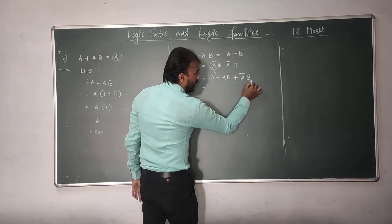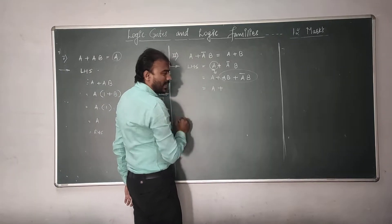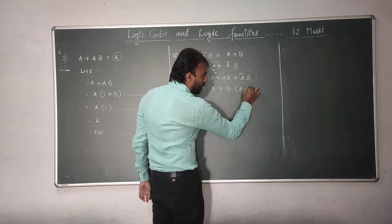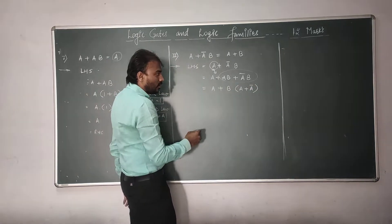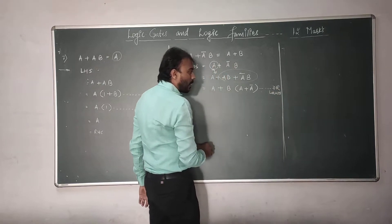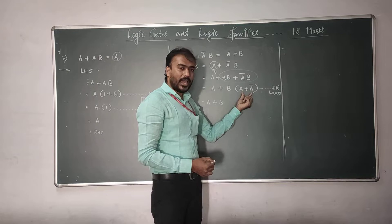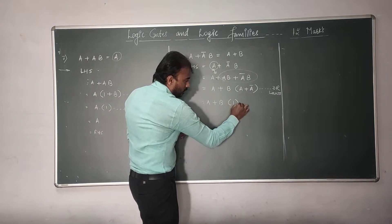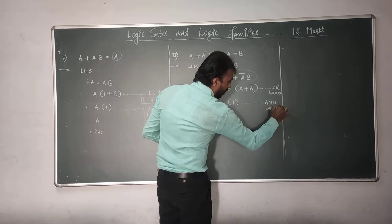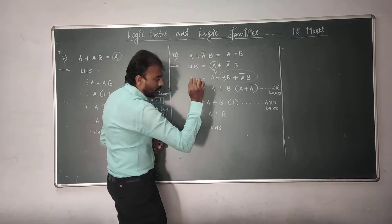Now, is there anything common between these terms? Yes. I write first A as it is, plus — the common factor is B. What is left inside the bracket? A plus A complement. We discussed the OR law in the previous video session: A plus A complement is always 1. So this A remains as it is, and B multiplied by 1 will always be B, giving us A plus B, which is nothing but the RHS.